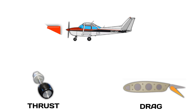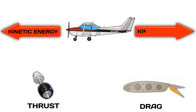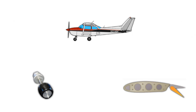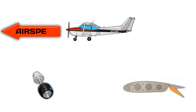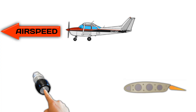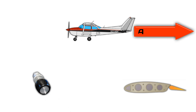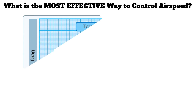Thrust and drag are tools we can use to affect our kinetic energy state. If we want to gain energy or airspeed, we can increase our thrust or reduce our drag. If we want to reduce our energy or airspeed, we can decrease our thrust or increase our drag. And this is why pilots argue over how to control the airplane when making an approach — it's true that both thrust and drag can be used to control airspeed. But the real question is: what's the most effective way to control airspeed? To answer that, we need to take a closer look at how drag affects an airplane.